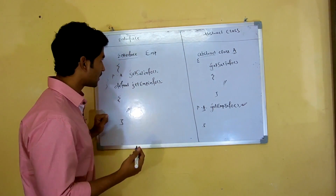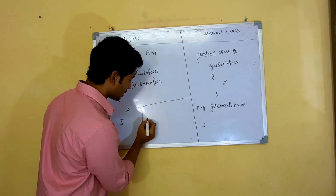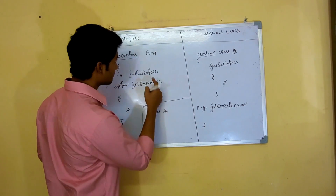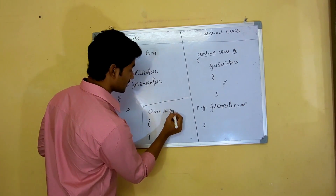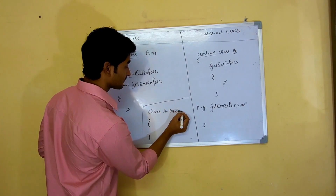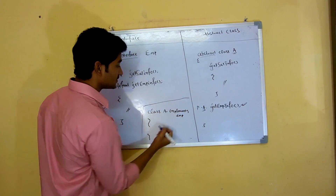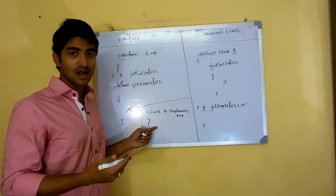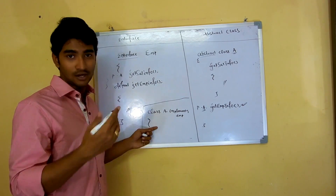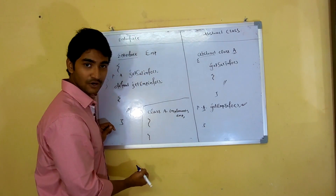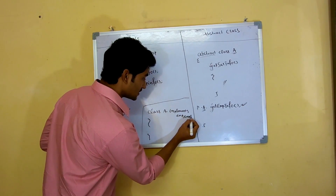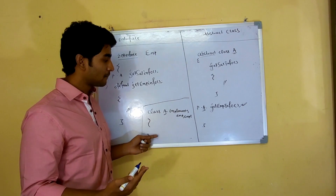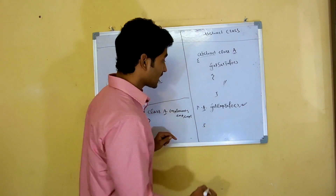If you have a class A implementing interface EMP — 'class A implements EMP' — that works fine. And if you have another interface EMP1, you can put a comma and make it 'A implements EMP, EMP1'. So one class can implement any number of interfaces. There is no problem with that.